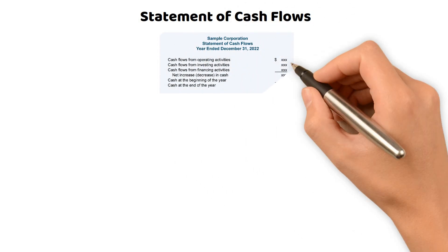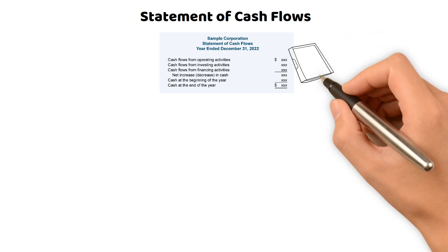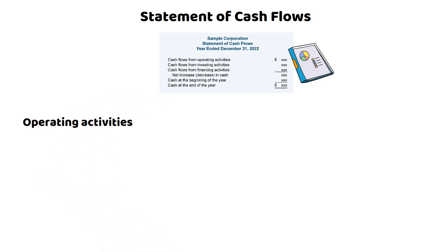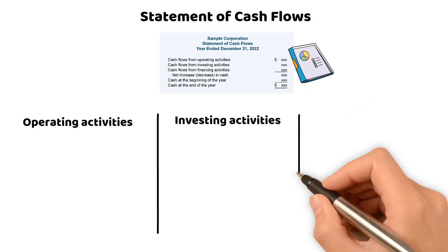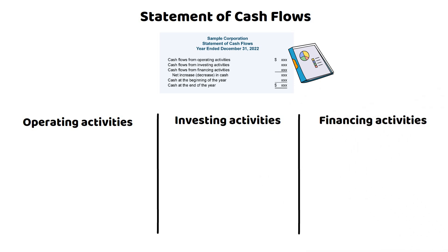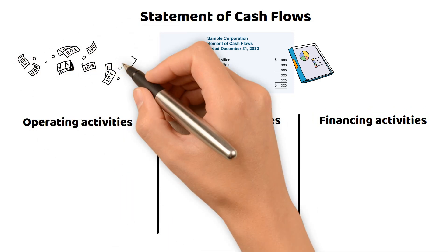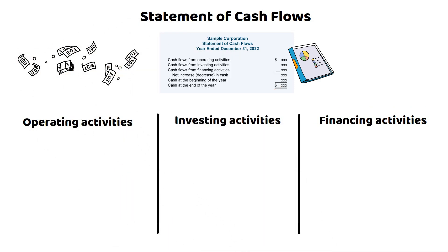The statement of cash flows is a financial statement that shows the inflows and outflows of cash and cash equivalents from a business during a particular period. It is one of the leading financial statements prepared by a company, along with the balance sheet and income statement. The statement of cash flows is divided into three main sections: operating activities, investing activities, and financing activities. Each section reports cash inflows and outflows related to the company's respective activities during the period.